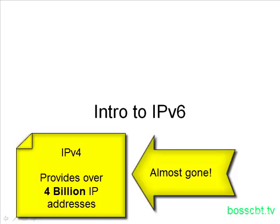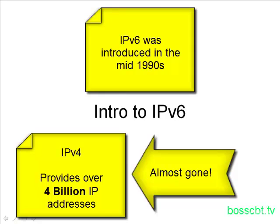IP version 6 provides significantly more IP addresses. But don't be fooled — IP version 6 isn't brand new. In fact, it's been around since the mid-1990s. However, everyone has been slow to adopt it because they didn't have to for quite a while. Now that IP version 4 is pretty much gone, IP version 6 is starting to be more and more widely implemented.